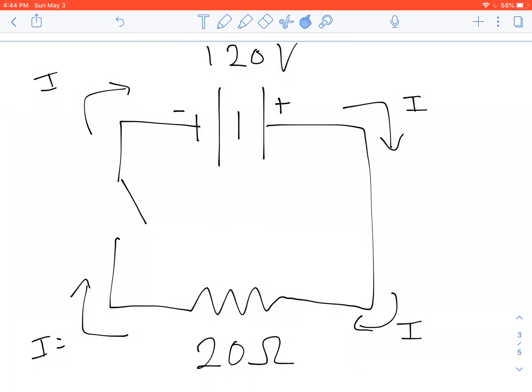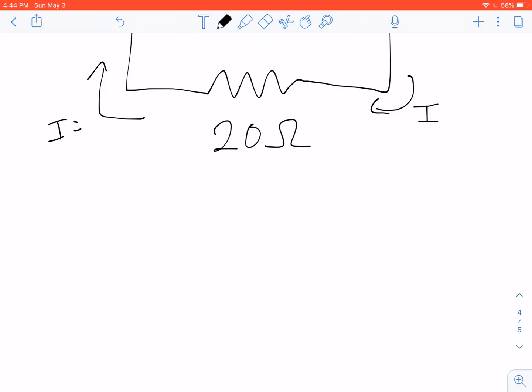Alright. How much current's going to flow? Just like in the previous example, we have I equals V over R. We have 120 volts over 20 ohms. That tells us 6 amps flows in this particular circuit.